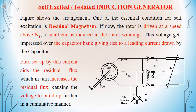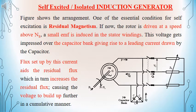One essential condition in the case of self-excited induction generator is that it requires residual magnetism for self-excitation. When the induction generator is driven at a speed above the synchronous speed, because of the residual magnetism, there will be some amount of EMF induced in the stator winding. This voltage will be impressed over the capacitor bank and will allow a leading current to circulate. The flux set up by this leading current will be aiding the residual flux, and because of the same, the voltage that is built up will be increasing.